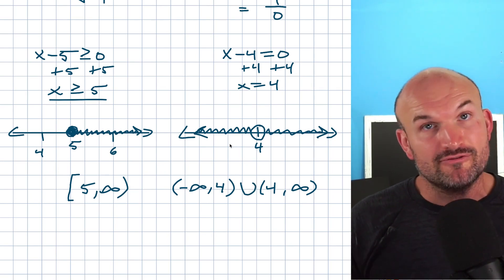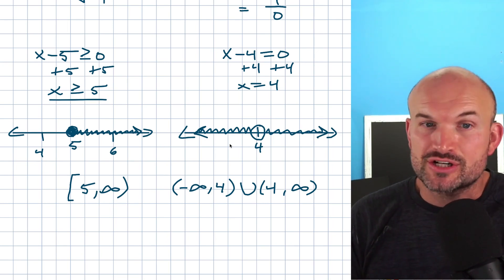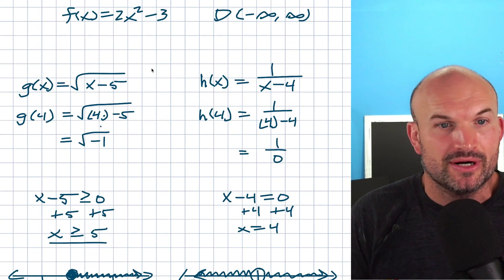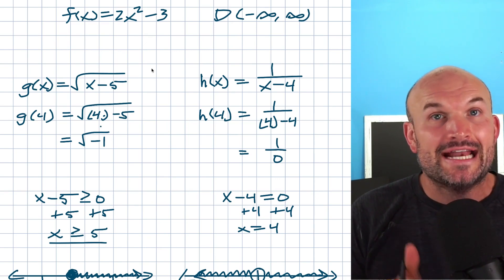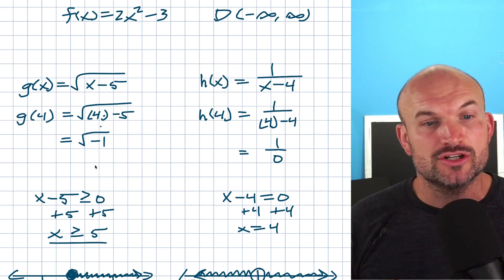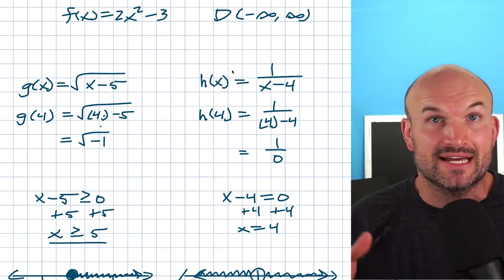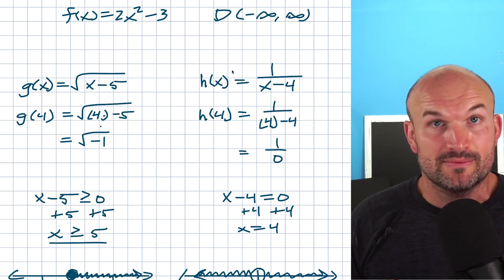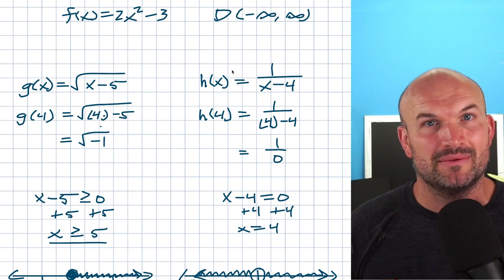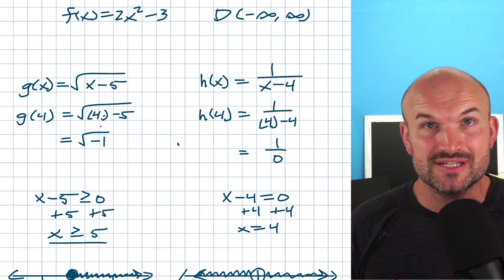These are the two main restrictions for functions we'll focus on in this video. There are many other functions and restrictions, but I want to keep things simple and have you focus on the two easiest to remember: you cannot take the square root of a negative number, and you cannot divide by zero. Let's look at four different examples and practice identifying the domain without knowing what the graph looks like.